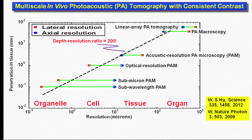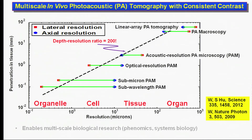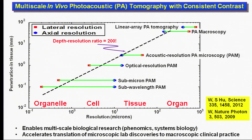The growth is driven largely by the unique capability of photoacoustic tomography for multi-scale, in vivo imaging with consistent contrast. In current practice, while organelles and cells are imaged with optical contrast, tissues and organs are imaged non-optically, impeding image correlation on multiple length scales. Photoacoustic tomography bridges the gap from organelles to organs, promising to impact biology and clinical translation across scales.